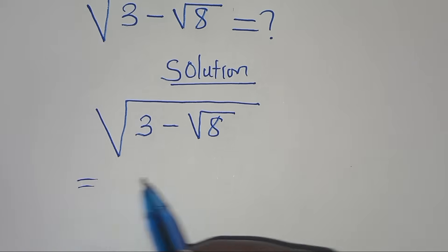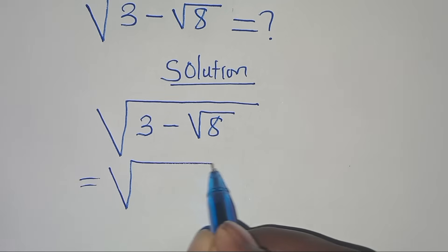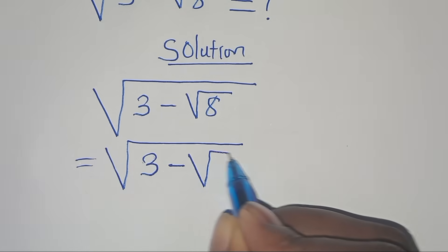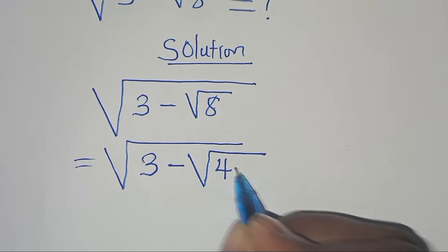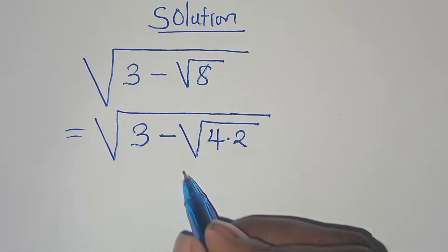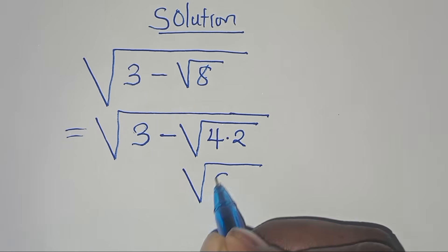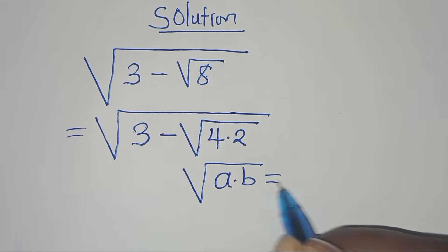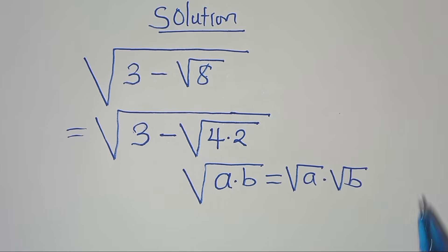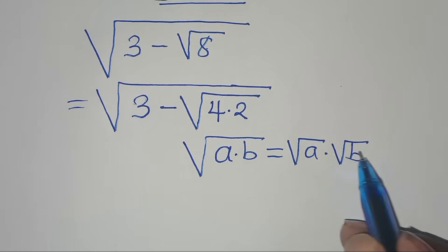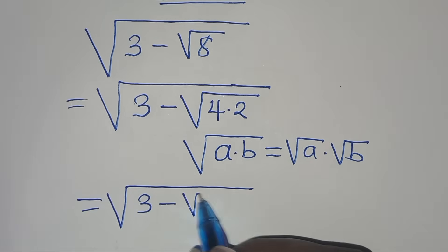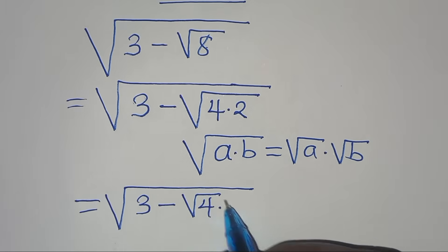We can express square root of 8. This is the same thing as 3 subtract square root of 8, which is 4 multiplied by 2. Now we have square root of 4 times 2. This is in the form of square root of A multiplied by B, which we can express as square root of A multiplied by square root of B. Applying this property, we have square root of 3 subtract square root of 4 times square root of 2.